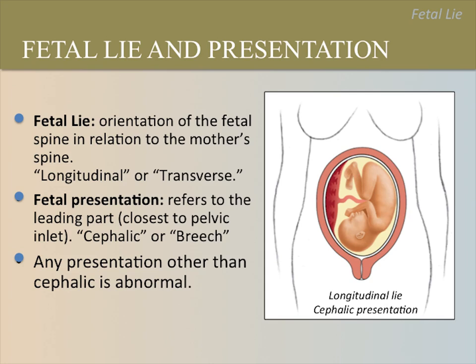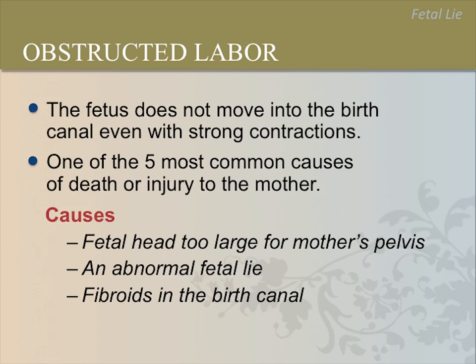Please have your trainer demonstrate a cephalic and breech presentation and a transverse fetal lie using a doll. Any fetal presentation other than cephalic is abnormal, which can lead to complications during delivery. For example, a breech baby can become stuck, which leads to obstructed labor. Another complication of transverse fetal lie or breech presentation is that the umbilical cord can slip down into the vagina after the fetal membranes break and become compressed. Obstructed labor is a condition where the fetus does not move into the birth canal, even with strong contractions. It is the fifth most frequent cause of maternal death.